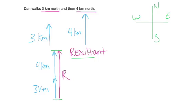And in this case, we can add them together, and Dan went a total of 7 kilometers north. And if you were to draw this to scale, you would find that your resultant should measure that way as well.